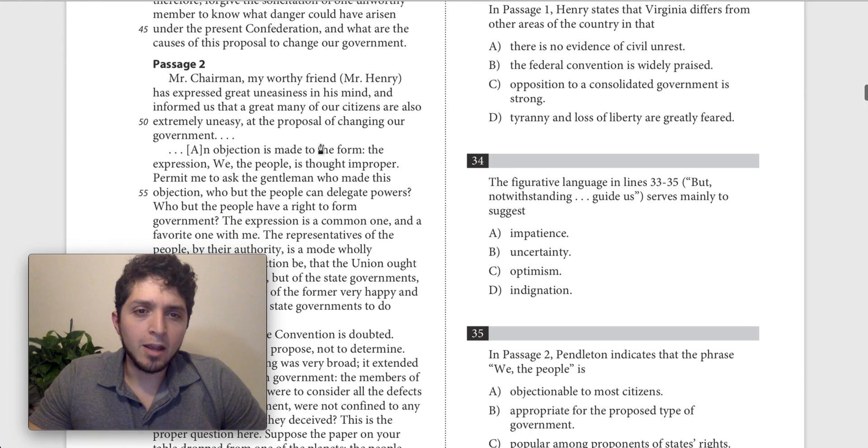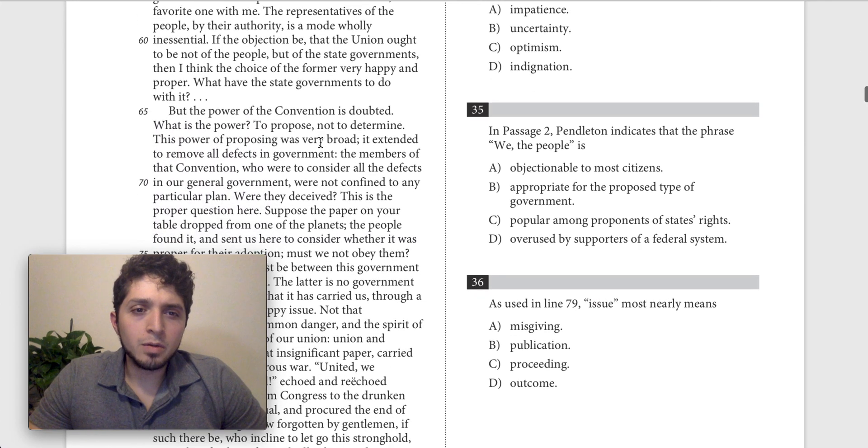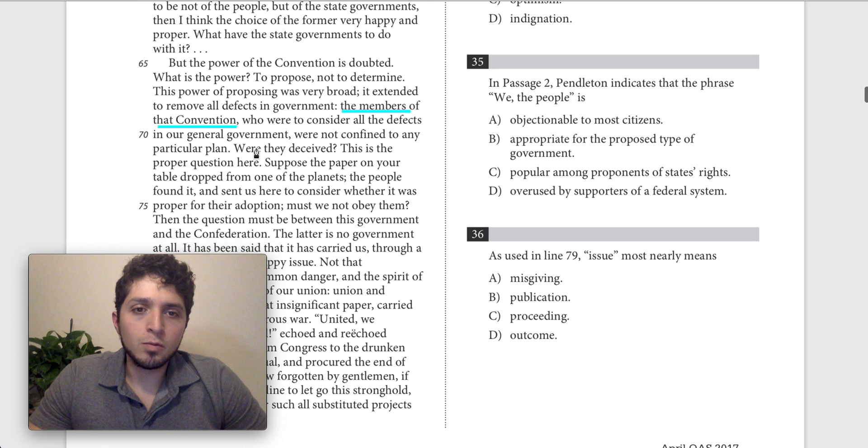So I'm going to keep scanning to see what kind of claim could be there and eventually we should end up here, the members of the convention. If we scan we'll find that and what does he say? He says the members of the convention were to consider all the defects in our general government and were not confined to any particular plan. Were they deceived?